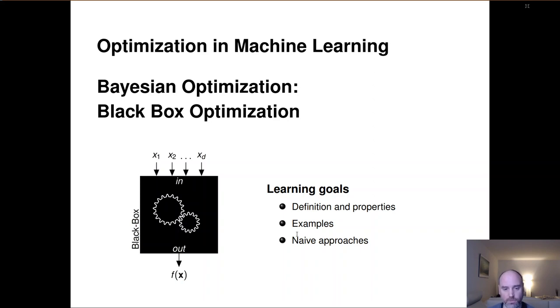Hi and welcome to the first session in our new chapter on Bayesian optimization. This will introduce black box optimization in a certain sense again because we already talked about the general scenario in the beginning of the lecture.